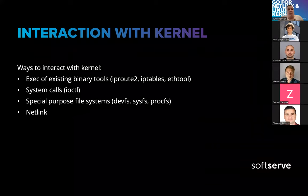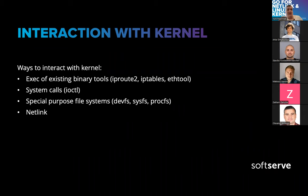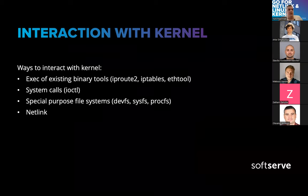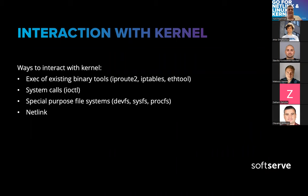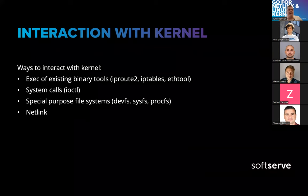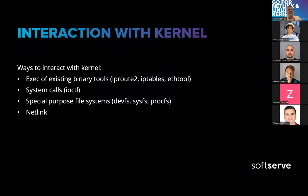We need to understand what ways of interaction with the Kernel we have — there are four of them. First, the simplest: just wrap existing executable binary tools from your Linux distribution into your user space application. It's not specific to Golang. But you have to deal with standard input, standard output, parse commands — it's not a very convenient way. Second is system calls, one of which is IOCTL, which you can call to interact with devices. Older Linux distributions used IOCTL, but it's now considered legacy.